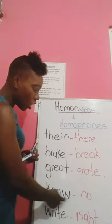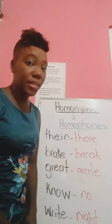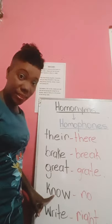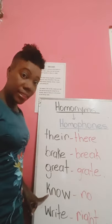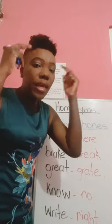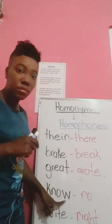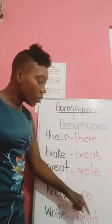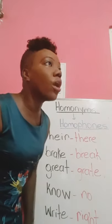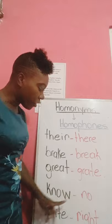Let's move on to "know" and "no." K-N-O-W has a silent K, and it indicates your knowledge of something — "I know what you did last night." N-O expresses disapproval — "No, you cannot go outside." So you are not approving something.